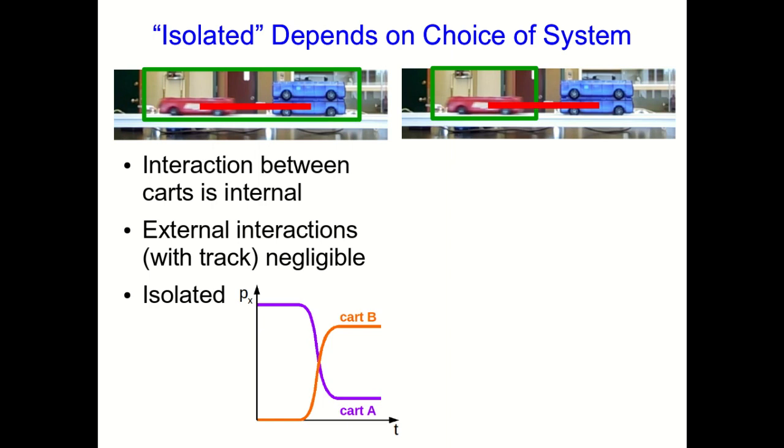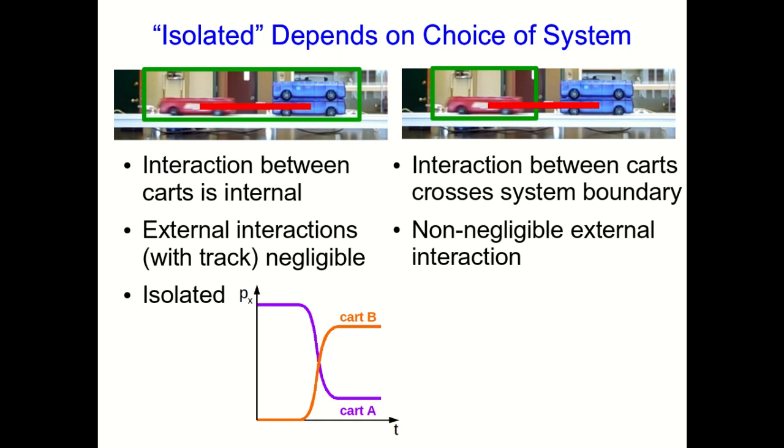On the other hand, we could talk about a system where we've chosen to just have one cart in our system. Now the interaction between the carts crosses the system boundary. That means it's an external interaction. And we know it's strong, so we can't neglect it. And so this is not an isolated system. So depending on our choice of system, we can make our system be isolated or not. And while for the isolated system of two carts, the momentum stayed the same, you can see that, since the total momentum now is just the momentum of one cart, it changes during the collision.